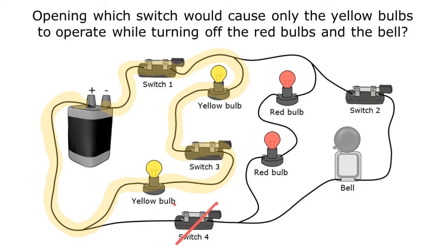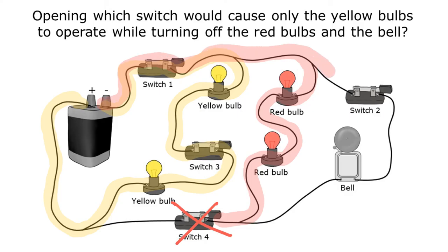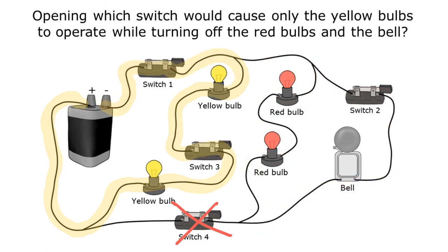It must be that we open switch four — let's make sure we understand why. If I try to go from one side of the battery through the red bulbs and back, I get stuck at switch four. If switch four is open, it creates a gap and electricity can't complete that path. The same thing happens going through the bell — that path also eventually reaches switch four, creating a gap there too. Because switch four is part of the path for both the red bulbs and the bell, opening switch four turns off everything except the yellow bulbs — making it the answer.